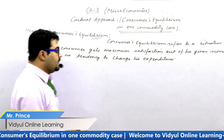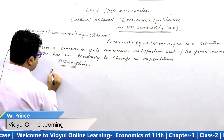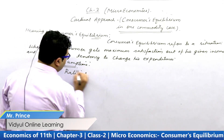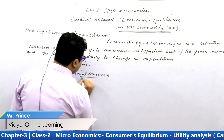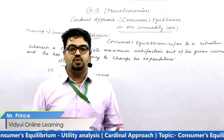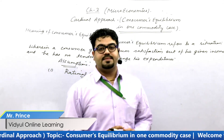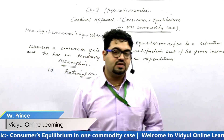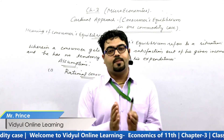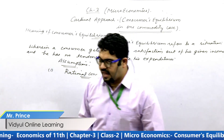Consumer equilibrium has a few assumptions we need to consider. The first assumption is a rational consumer. This means that a consumer is rational and knows very well which commodity he should consume and which commodity can provide him maximum satisfaction — he knows which commodity's consumption will give him more satisfaction.